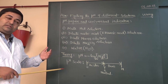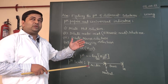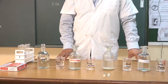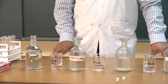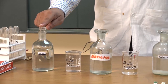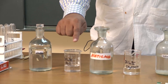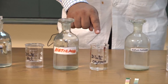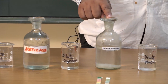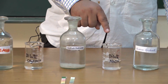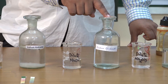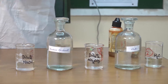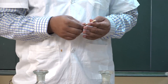Now we will come to the activity part — checking the pH of the following solutions and commenting on their nature. Here you can see different solutions in beakers: dilute hydrochloric acid, dilute acetic acid, dilute sodium hydroxide solution, dilute sodium carbonate solution, and water. Using pH paper we will now check the pH of each solution.